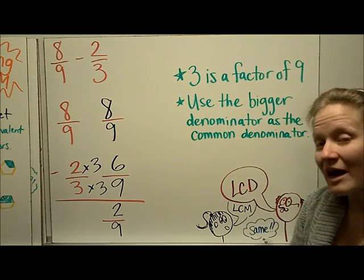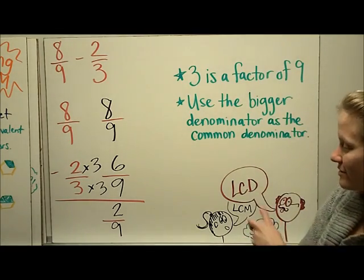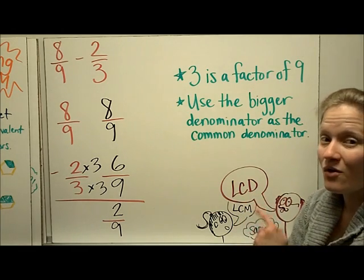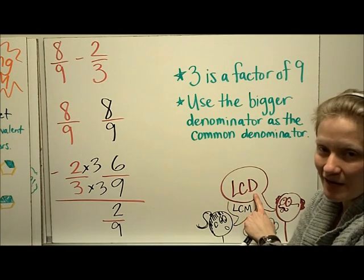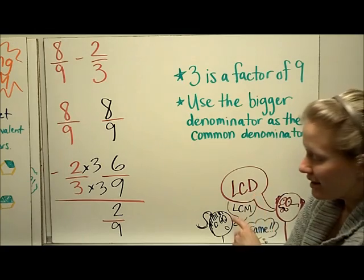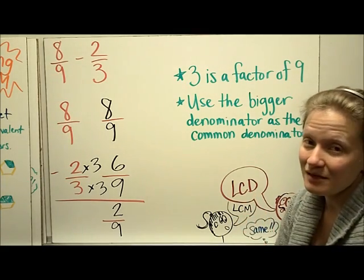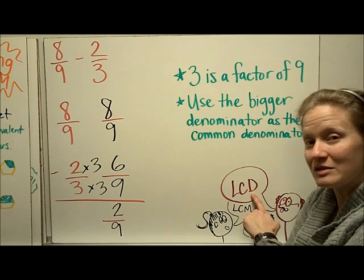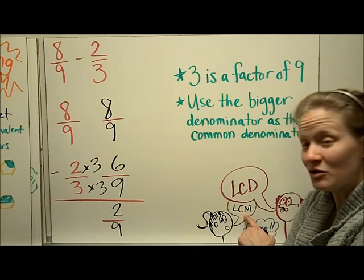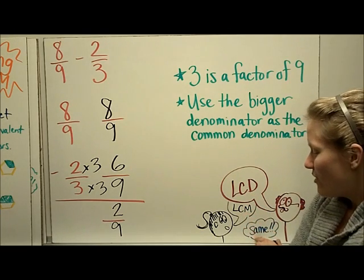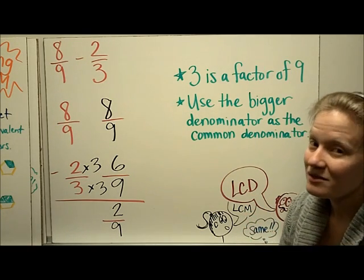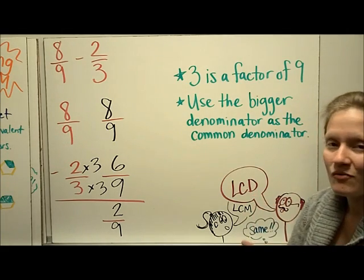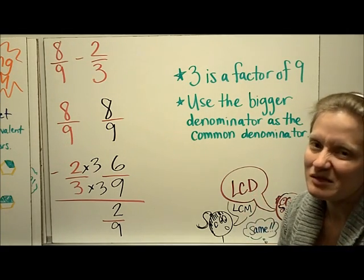One final thought: you might hear someone say LCD, or least common denominator. It's really the same thing as the least common multiple — you are finding the least common denominator when you use the least common multiple. Just like we have lots of names for simplifying fractions, these two things mean the same thing.